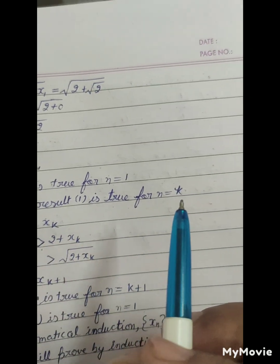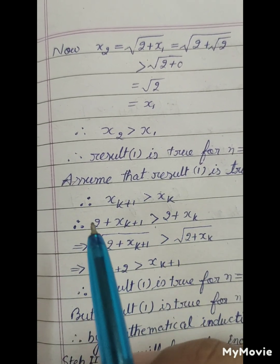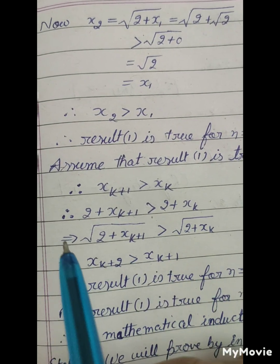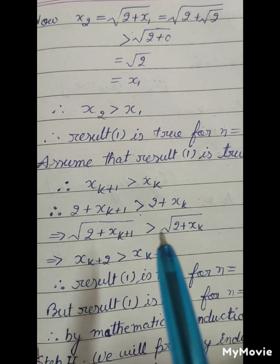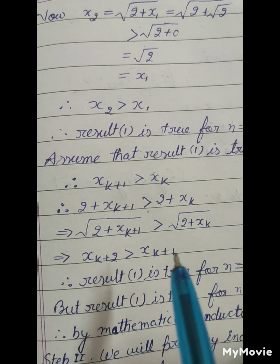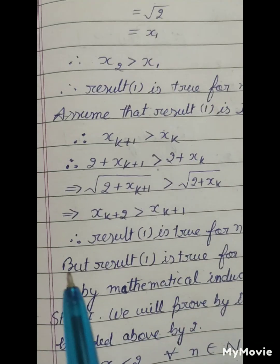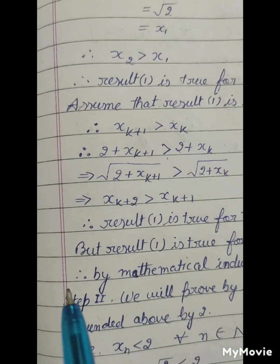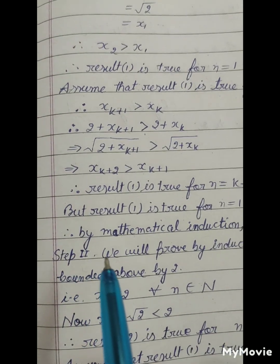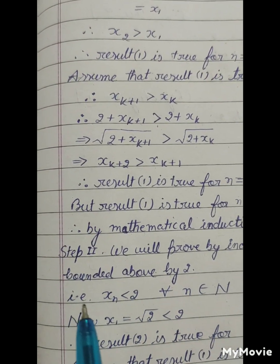Assume the result is true for n equals k, so xk+1 is greater than xk. Then 2 plus xk+1 is greater than 2 plus xk, which implies square root of 2 plus xk+1 is greater than square root of 2 plus xk, which implies xk+2 is greater than xk+1. So the result is true for n equals k+1. Since it is true for n equals 1, by mathematical induction xn is monotonically increasing.